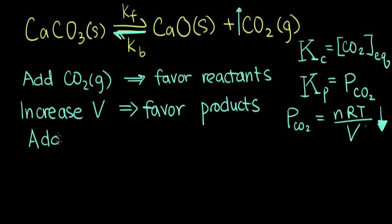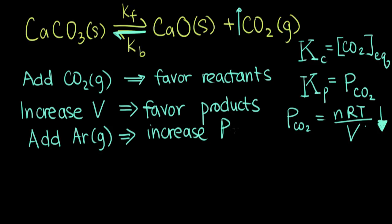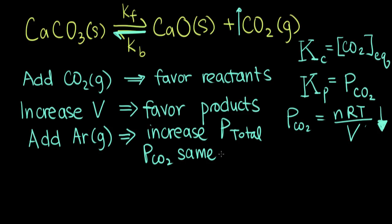The third change we're going to look at is what happens when you add argon gas. Argon gas is an inert gas — we don't expect it to react with anything. Adding argon will increase the overall total pressure of your container. But looking back at our equilibrium expressions Kc and Kp, the partial pressure for Kp only depends on the moles of CO₂ and the volume. Since we didn't change the moles of CO₂ and didn't change the volume, even though we increased P_total, the partial pressure of CO₂ stayed the same. So we didn't perturb our reaction from equilibrium, there will be no shift, and concentrations will still stay the same.